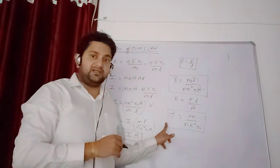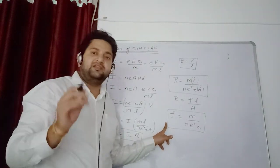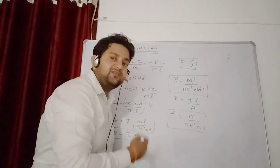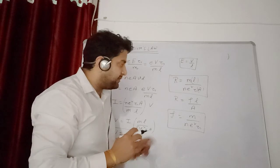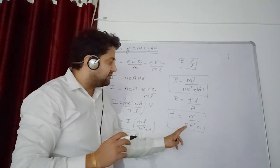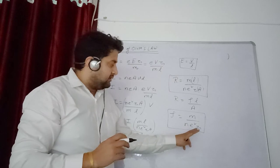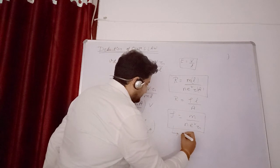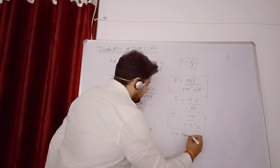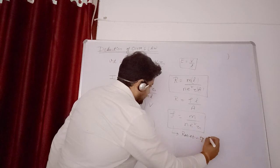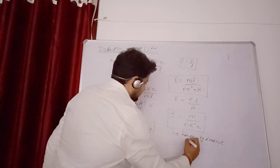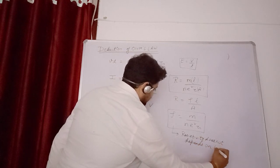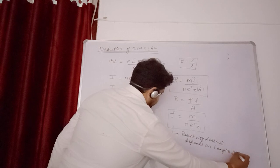Great, we have come to the point which we started in the previous class: factors affecting resistance or resistivity. Resistivity does not depend on length or area. From this formula we get rho equals M upon N E square tau. Is it depending on length? No. Is it depending on area? No. It depends on mass, number of electrons per unit volume, charge of electron and relaxation time. So we have clearly seen that resistivity does not depend on length and area.